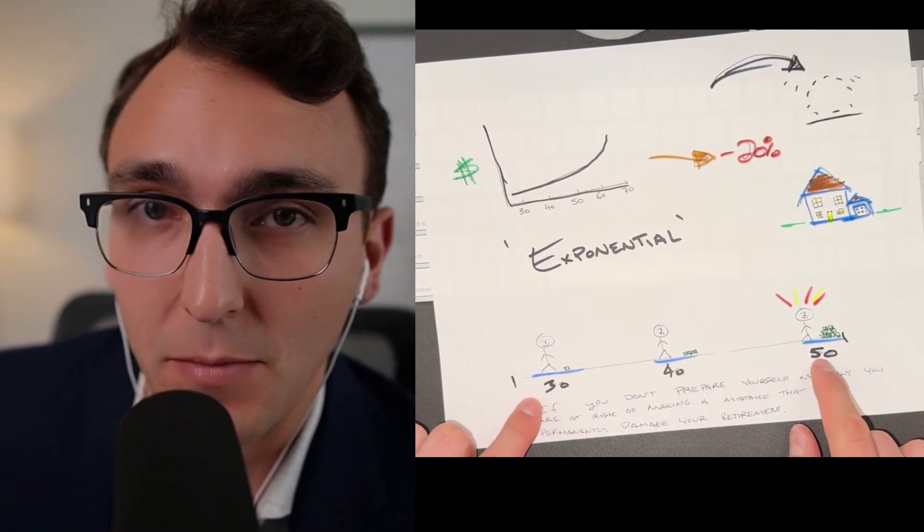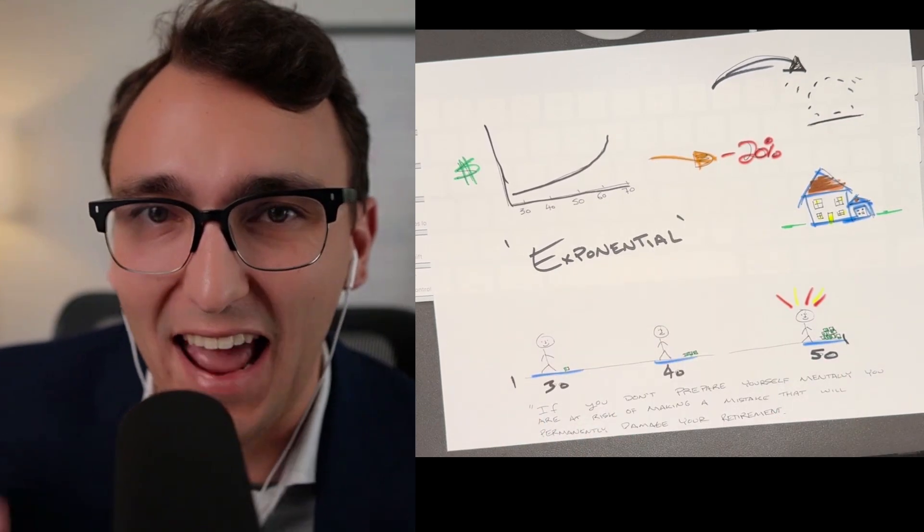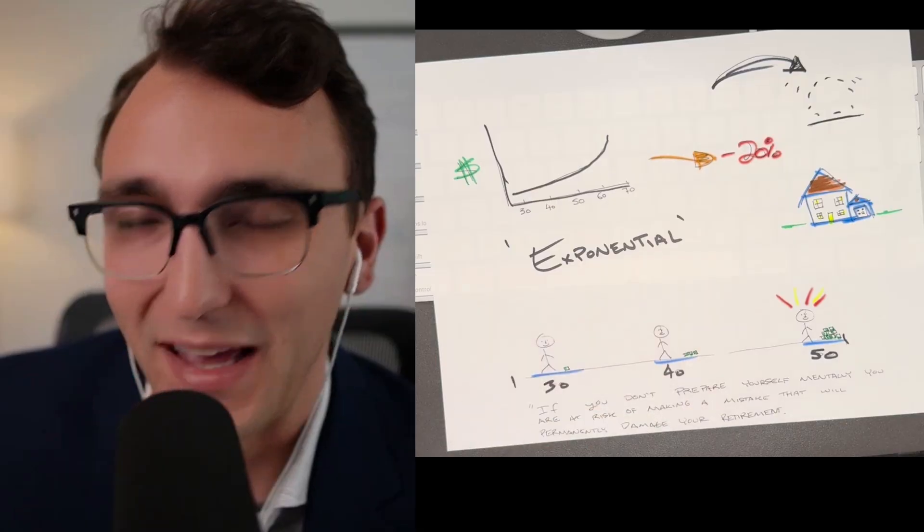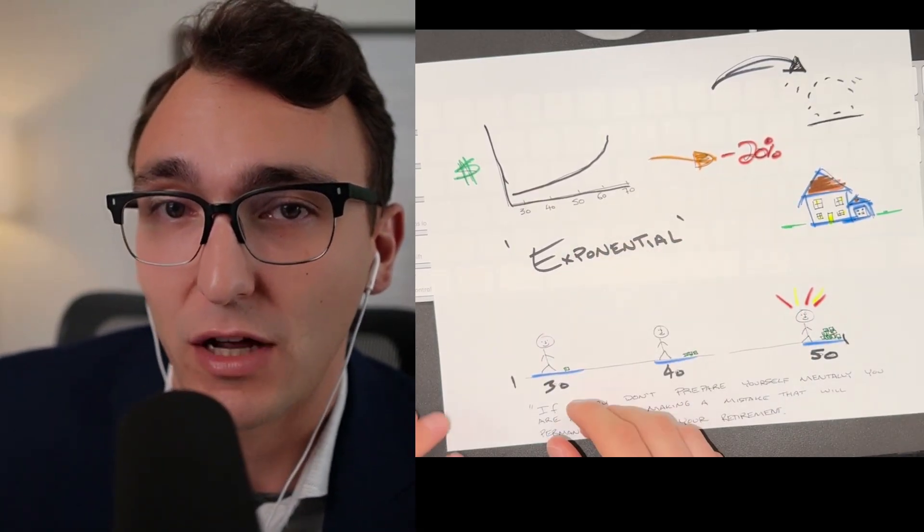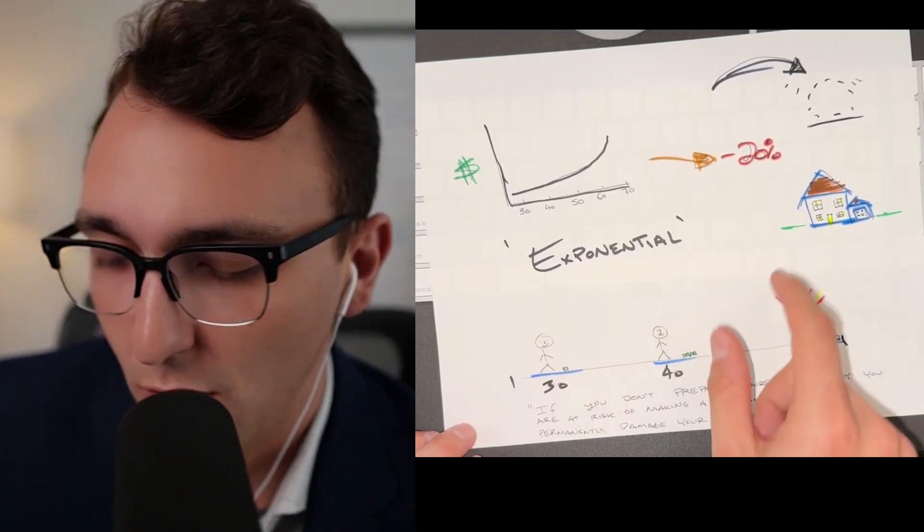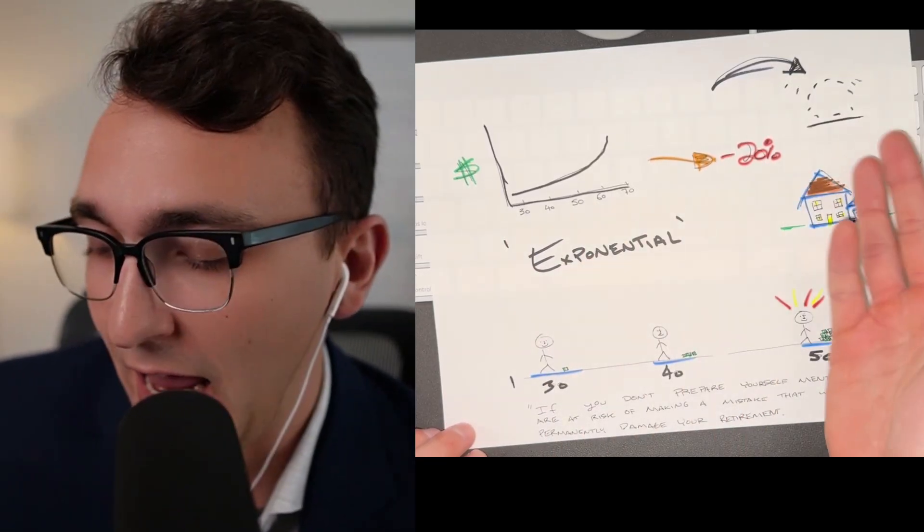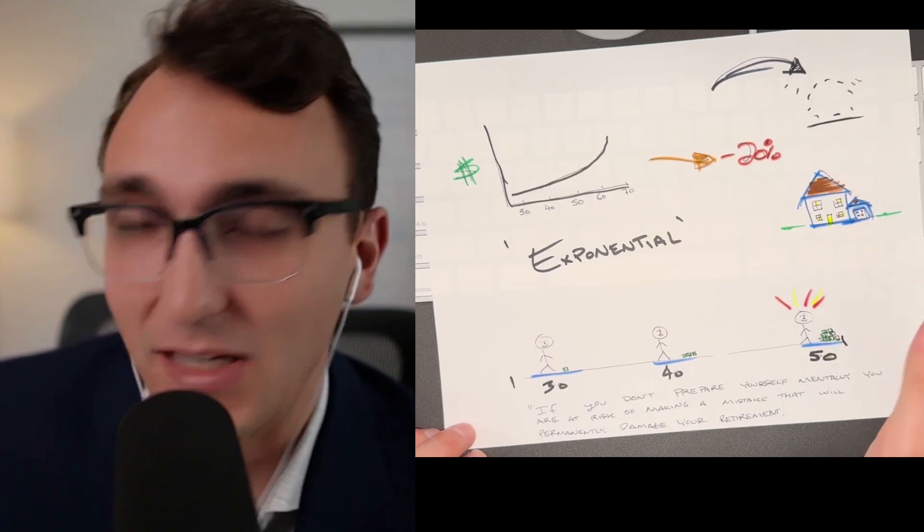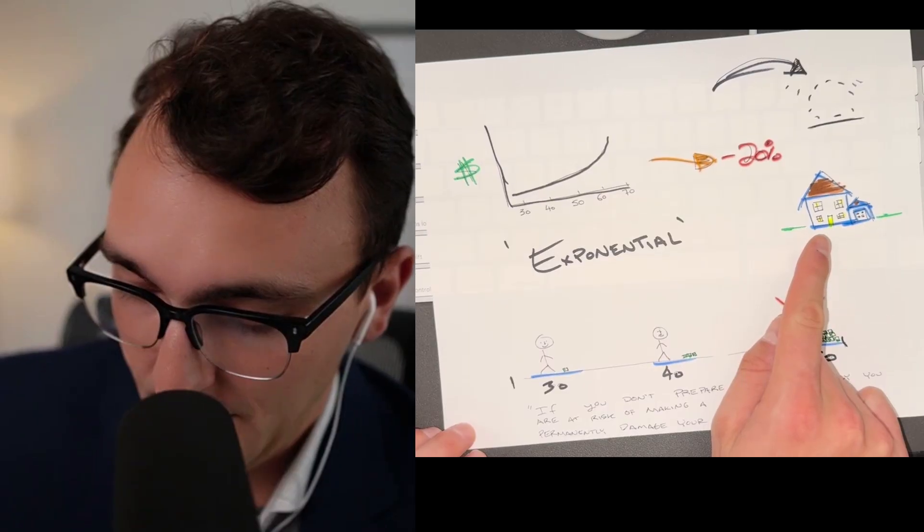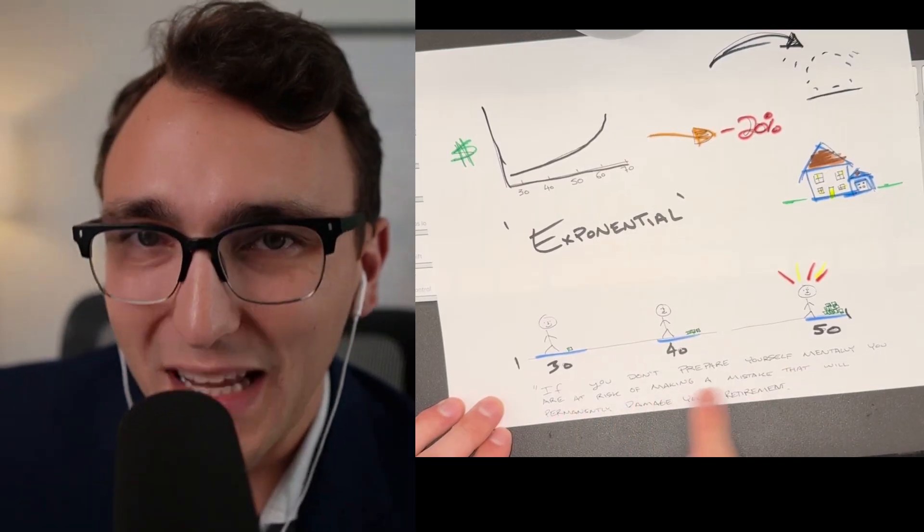When you're young, you have no money. And then by the time you're close to retirement, the idea is that you have a ton of money and this exponential growth is not natural to humans. We don't think in exponential terms, we think linearly, like things are just going to get incrementally better over time, but it doesn't happen that way. And when you're 15, 10, five years out from retirement, wealth really starts to accumulate very quickly just due to this exponential nature of things. So if you have a 20% loss in your portfolio when you're 30, you have basically no money relative. And a 20% loss of nothing is basically nothing. When you have a 20% loss when you're close to retirement, it's a bigger loss than what you paid for your first house. So if you don't prepare yourself mentally, you are at risk of making a mistake that will permanently damage your retirement.